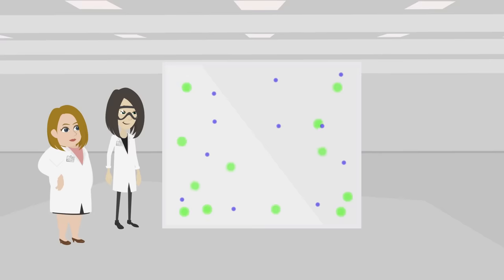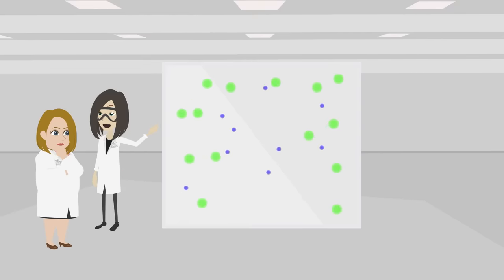Tran and her team study air pollution reactions in an atmospheric chamber, a specialized enclosure in which they can control atmospheric conditions, such as humidity, temperature, and light intensity, to study how chemicals react and respond to different atmospheric conditions.